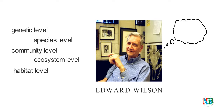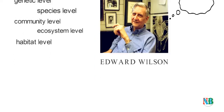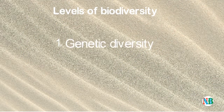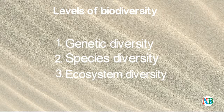The range of global biodiversity has been estimated between 5 to 30 million species. Biodiversity can be studied at three levels: 1. Genetic diversity, 2. Species diversity, and 3. Ecological or ecosystem diversity.